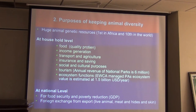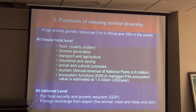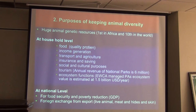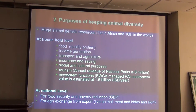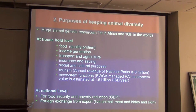Animals have social, cultural and tourism purposes. Some national parks can generate around 6 million per year, and ecosystem services provided by animals are estimated at 1.5 billion USD per year. At national level, animals are important for food security and poverty reduction. Livestock provides 26% of the agricultural GDP to the total economy.